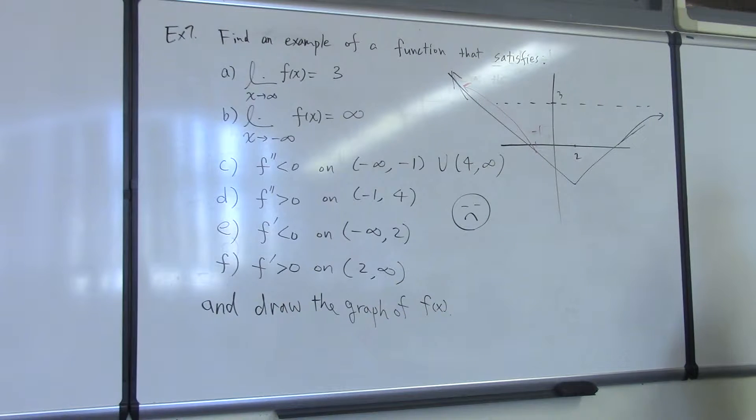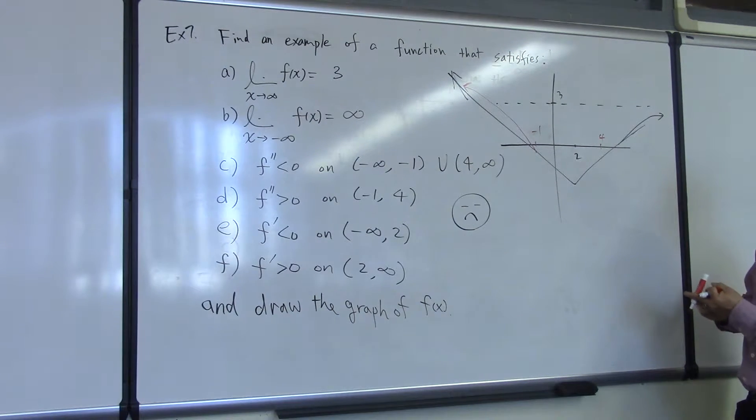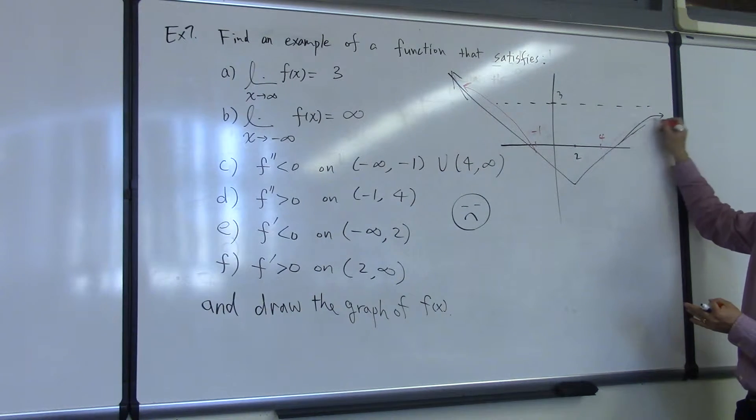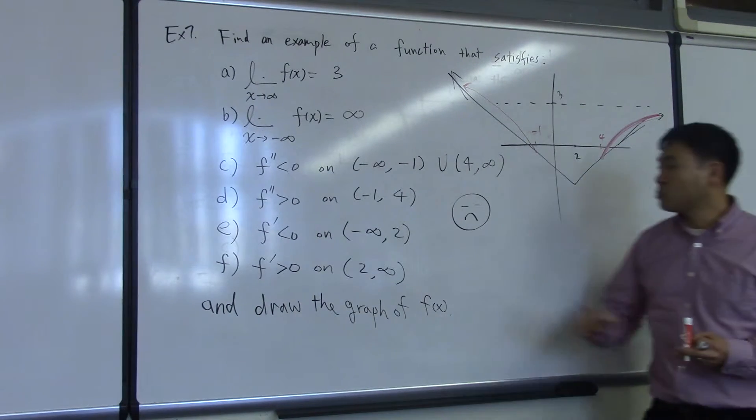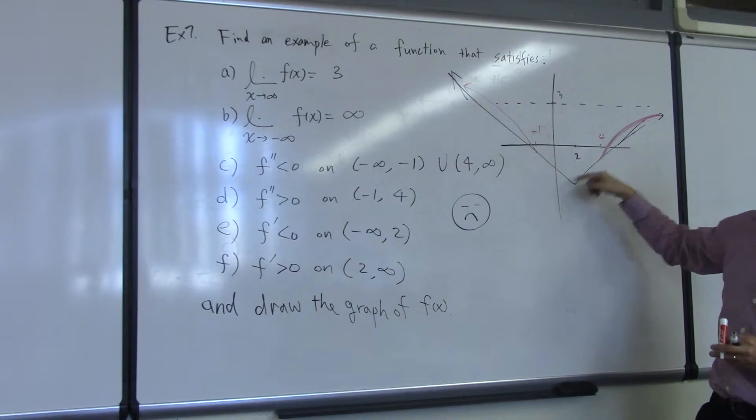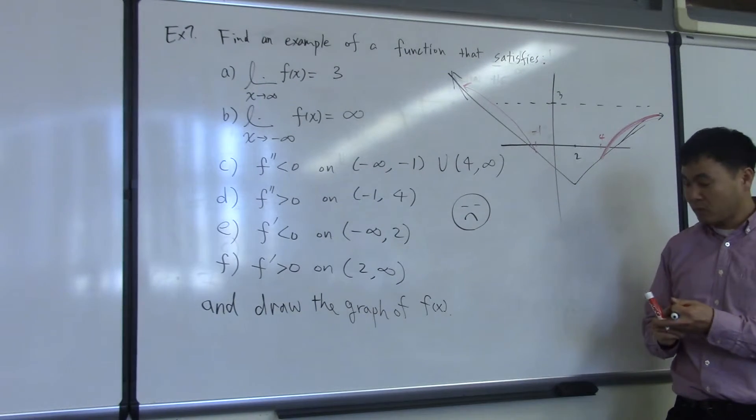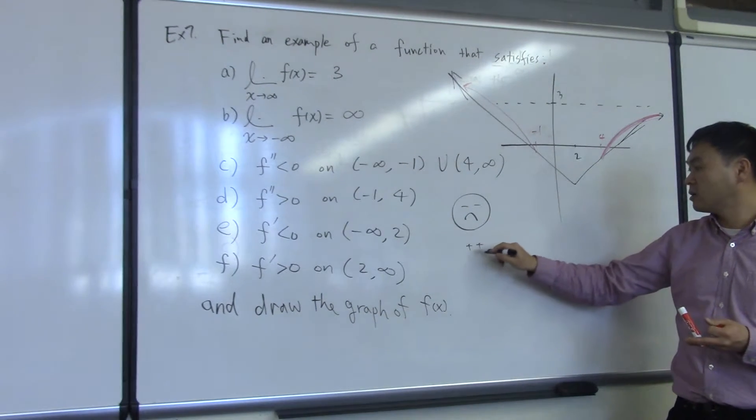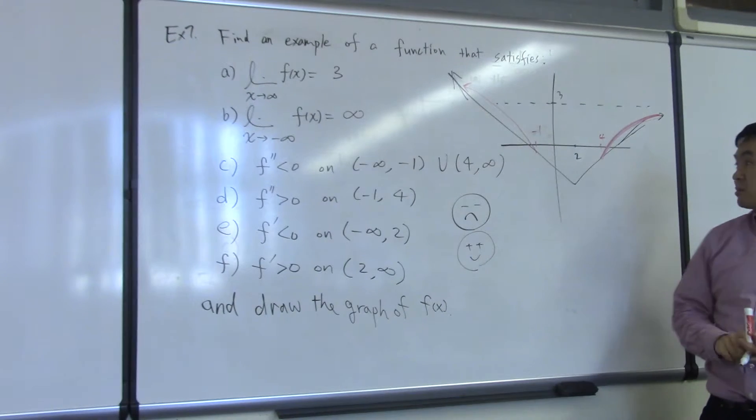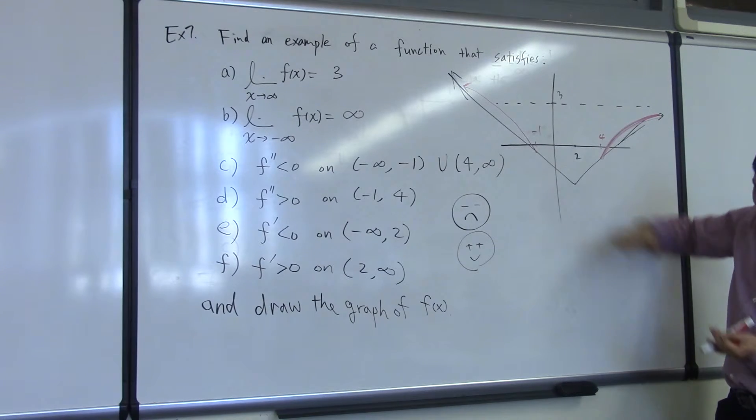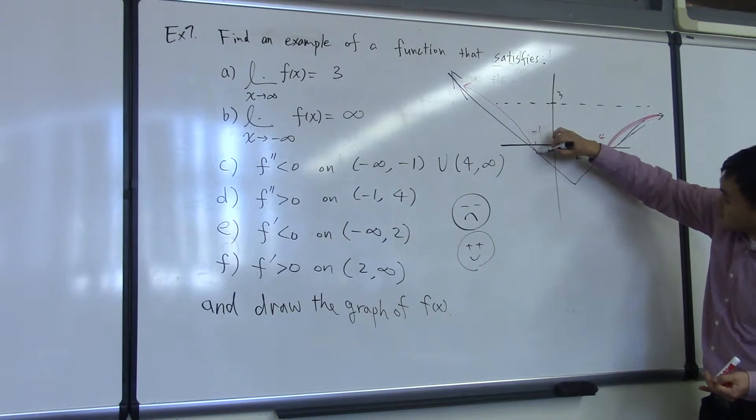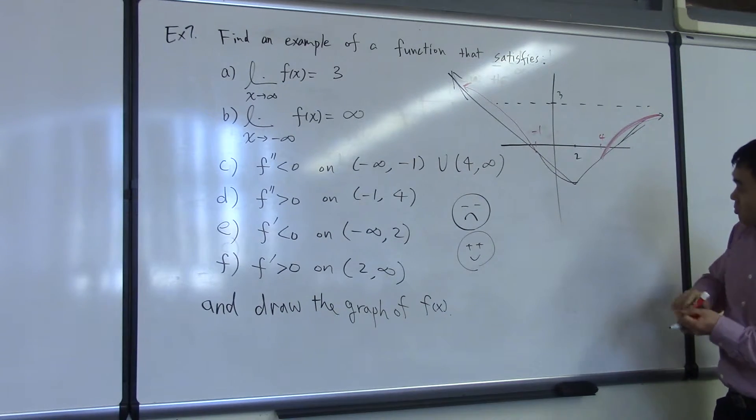And then at 4, if I say this is 4, and if I take this part and push it from below, the graph will bend like this. And then between negative 1 to 4, between here and there, it's concave up. Concave up means it's like pushing from above. So if you push it from above, these things will bend like this.